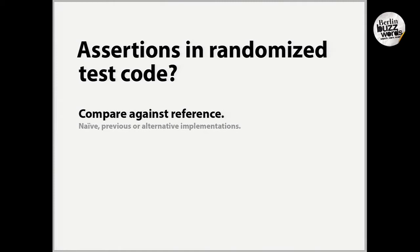How do we assert on those randomized inputs? There are a few ways. First, if you have a piece of software and a number of different implementations — either a naive implementation or a previous version of a component that is not optimized — feed the same input to both and compare the outputs. You don't need to know what these outputs are, they just need to be identical. If you have a sorting algorithm, feed it a sequence of integers — it should be sorted in the output.